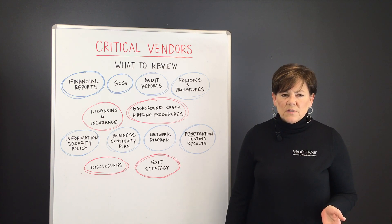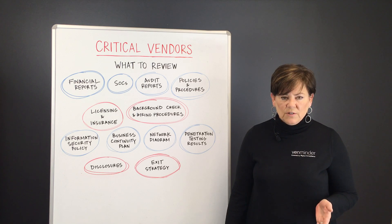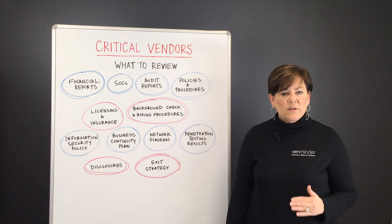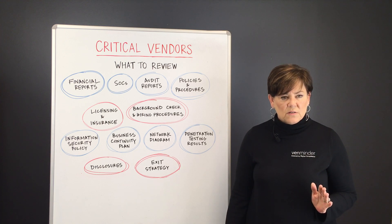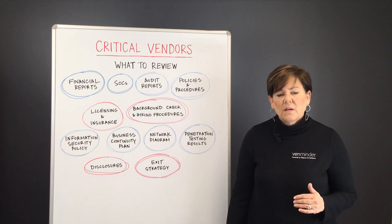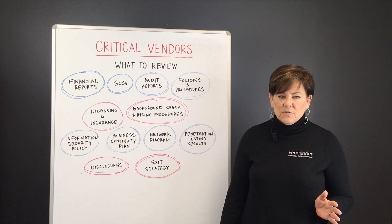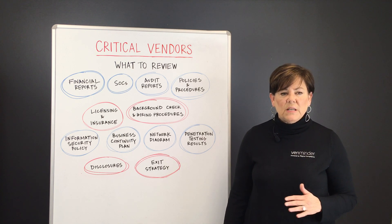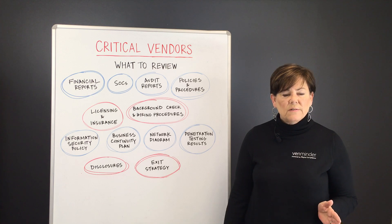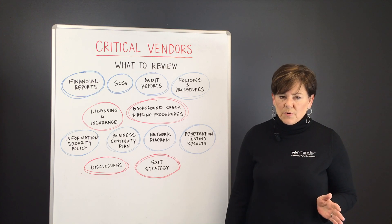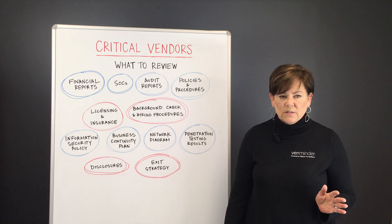Here's a thorough list of the items you should be reviewing on your critical vendors. First, financial reports — you need to review and evaluate the financial health of the company as an ongoing concern. Second, SOC audit reports — you need to analyze the operating controls of the company and determine any gaps between the financial institution and the company. Third, audit reports — you should ensure the appropriate management of all operating controls and regulatory guidance.